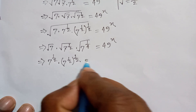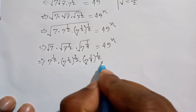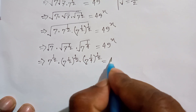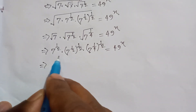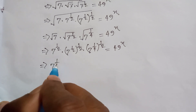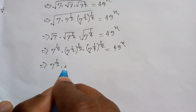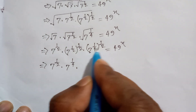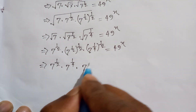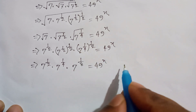And it can be written as 7 to the power 1 by 4, whole to the power 1 by 2, is equal to 49 to the power x. Or 7 to the power 1 by 2 times, and it can be written as 7 to the power 1 by 4 times, and it can be written as 7 to the power 1 by 8. Here we apply this formula: a to the power m, whole to the power n, is equal to a to the power m times n.